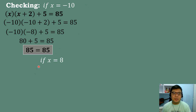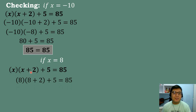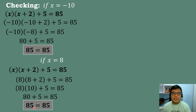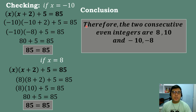For the second root, if x equals 8: 8 plus 2 equals 10, and 8 times 10 equals 80. 80 plus 5 equals 85. Since both sides of the equation are equal, the answer is correct. Therefore, the two consecutive even integers are 8 and 10, or negative 10 and negative 8.